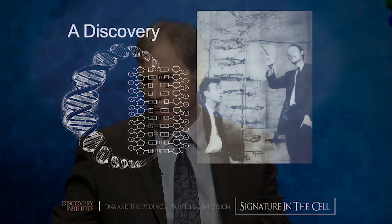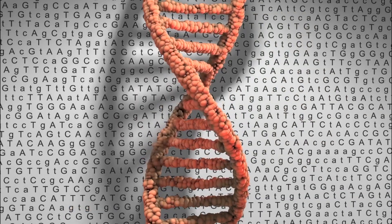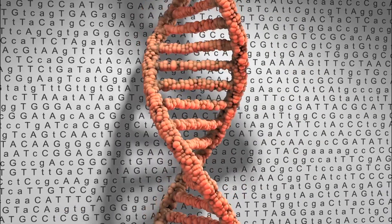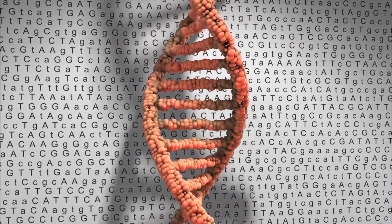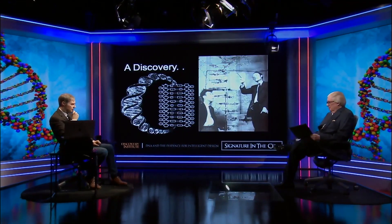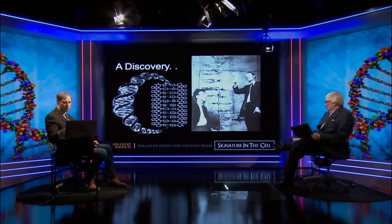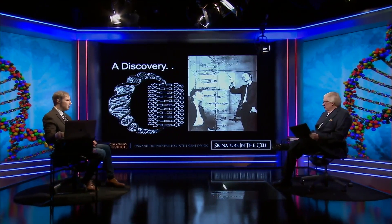DNA literally contains instructions in a digital form for directing the construction of those protein molecules — for arranging the amino acids subunit by subunit to make the long chain that will fold properly. The story of this discovery starts with Watson and Crick in 1953, when they elucidate the structure of the DNA molecule, which many scientists suspected had something to do with the transmission of hereditary information. Crick proposed further in 1958...